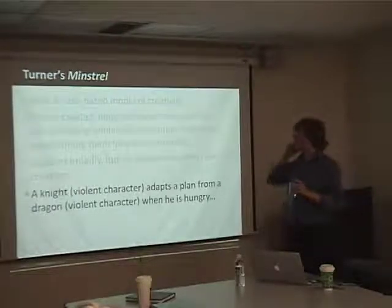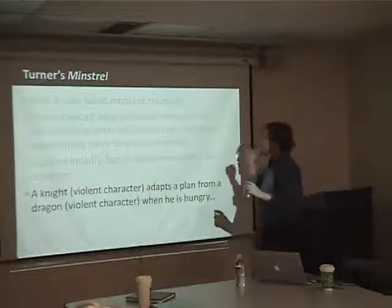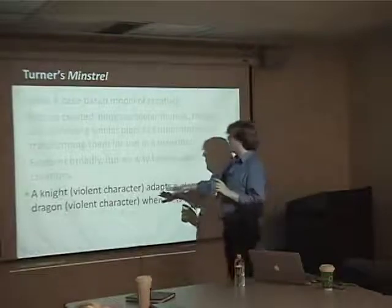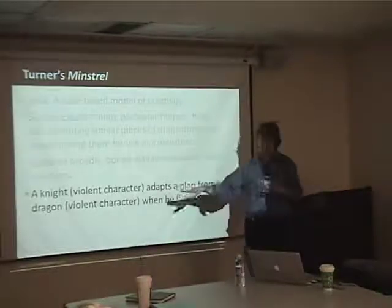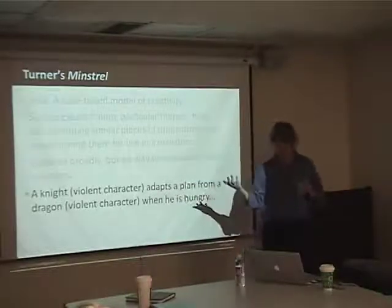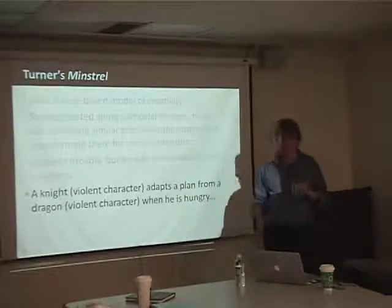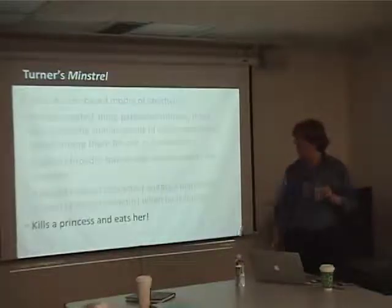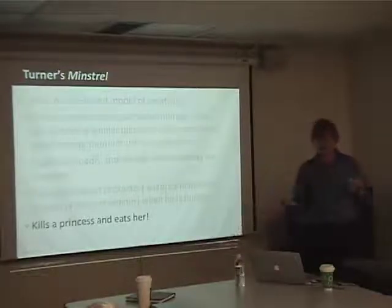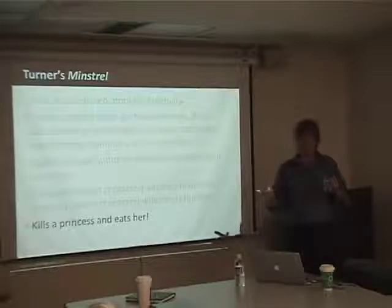For example, Turner talks about a knight who is a violent character adapting a plan from a dragon — another kind of violent character — when he's hungry. And so he kills a princess and eats her. Good plan — not hungry anymore.